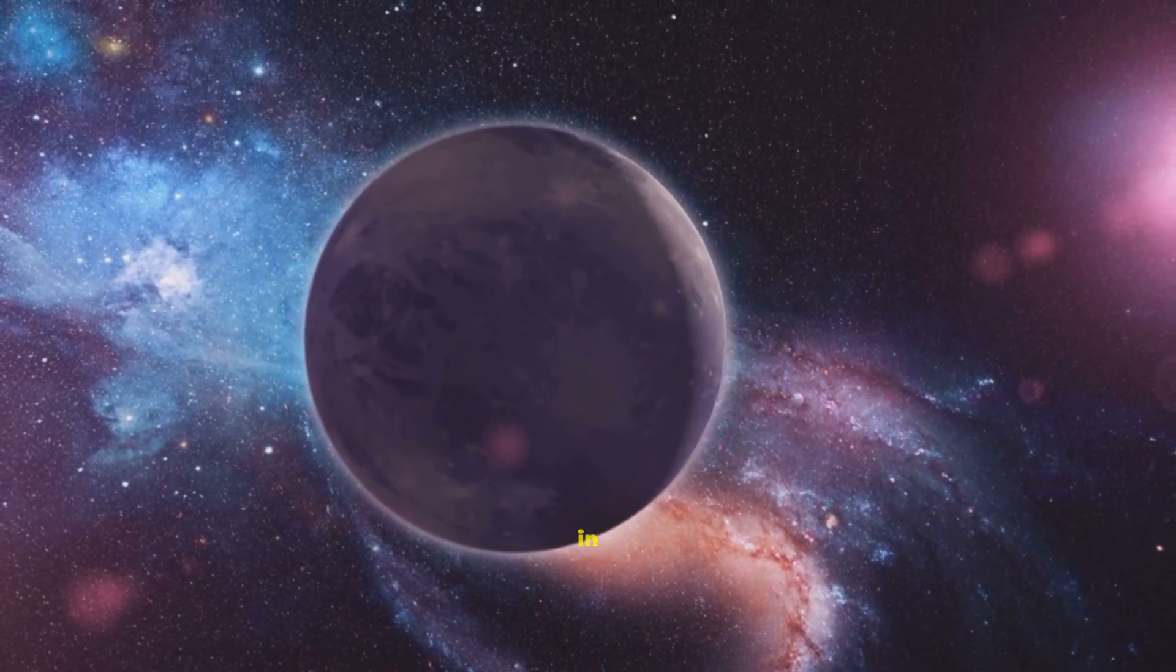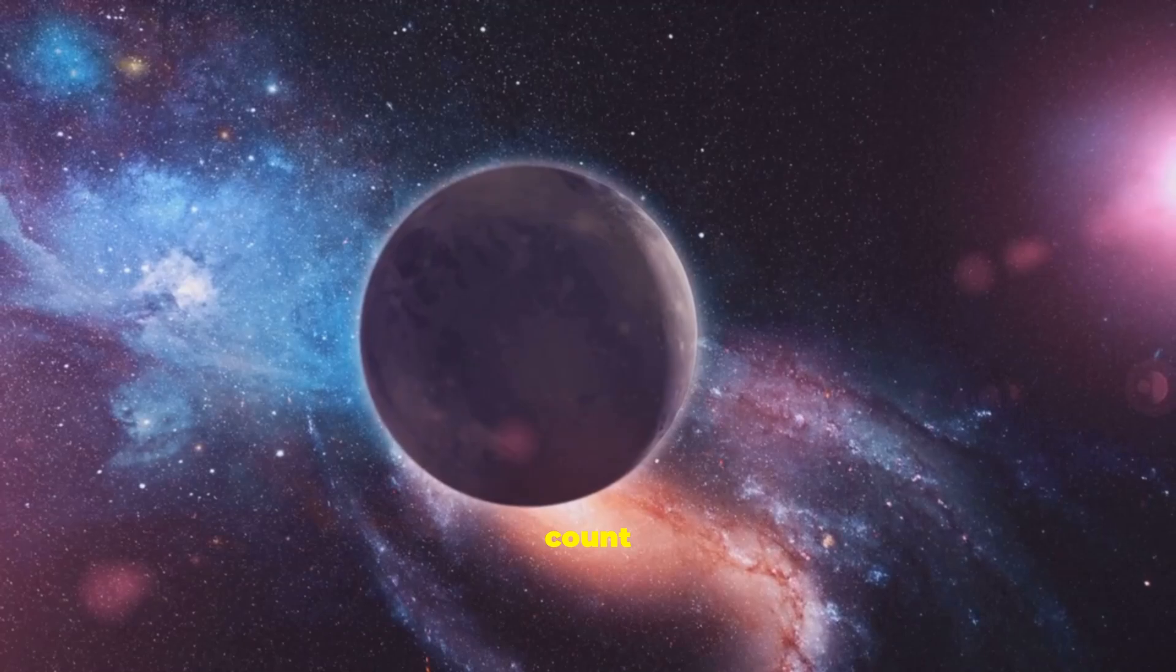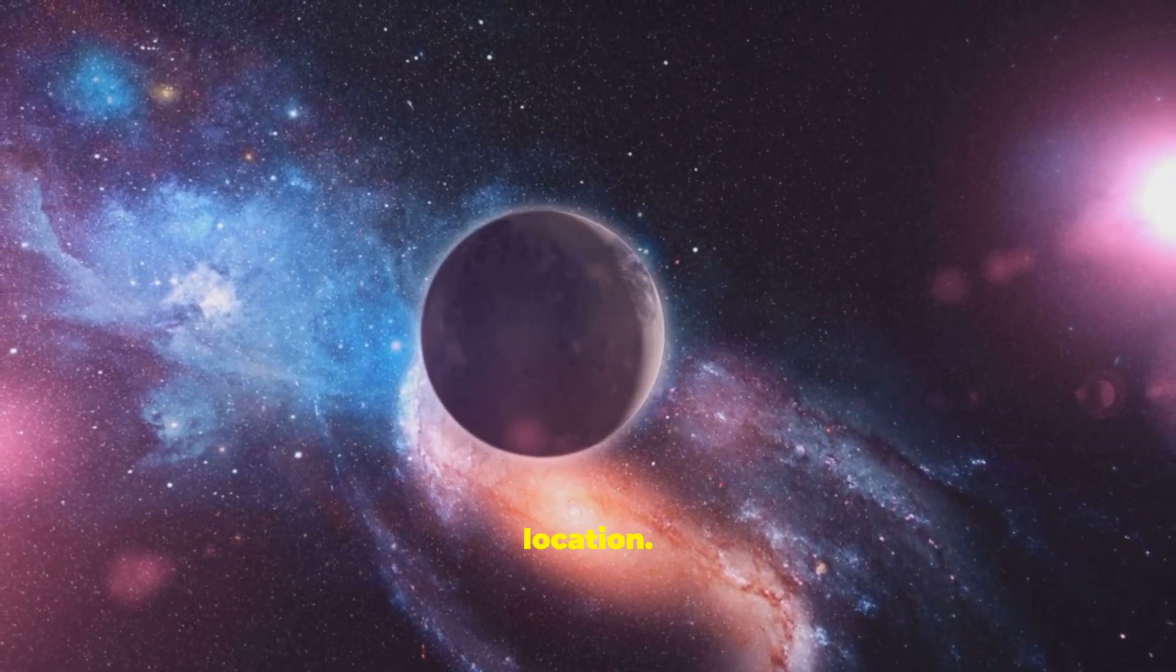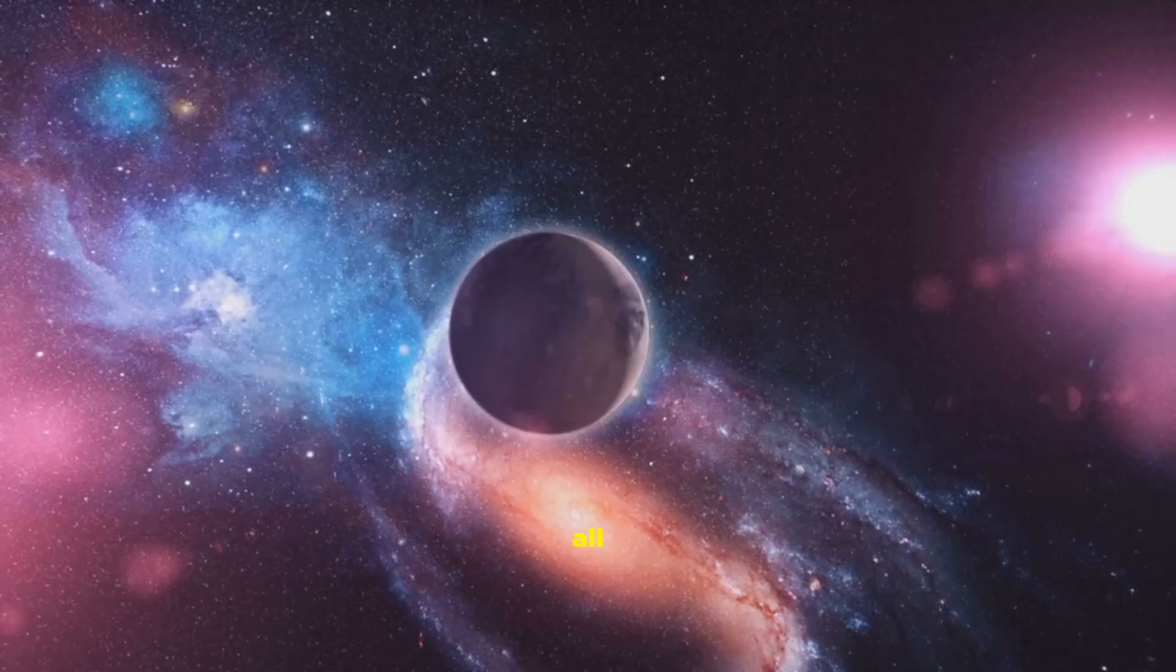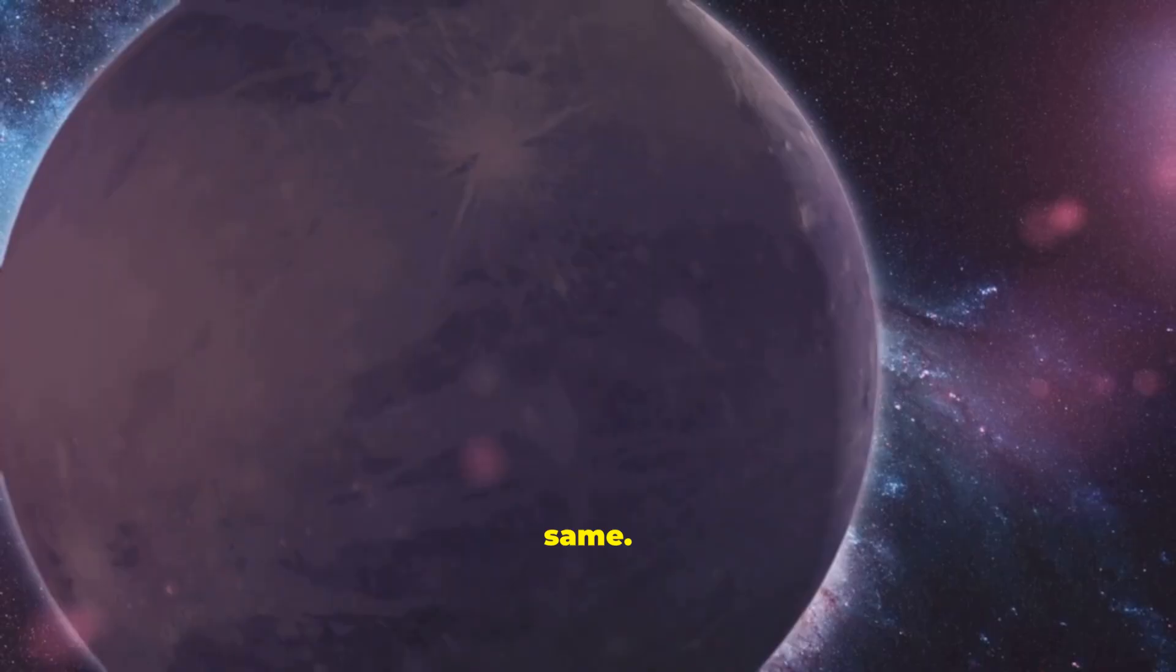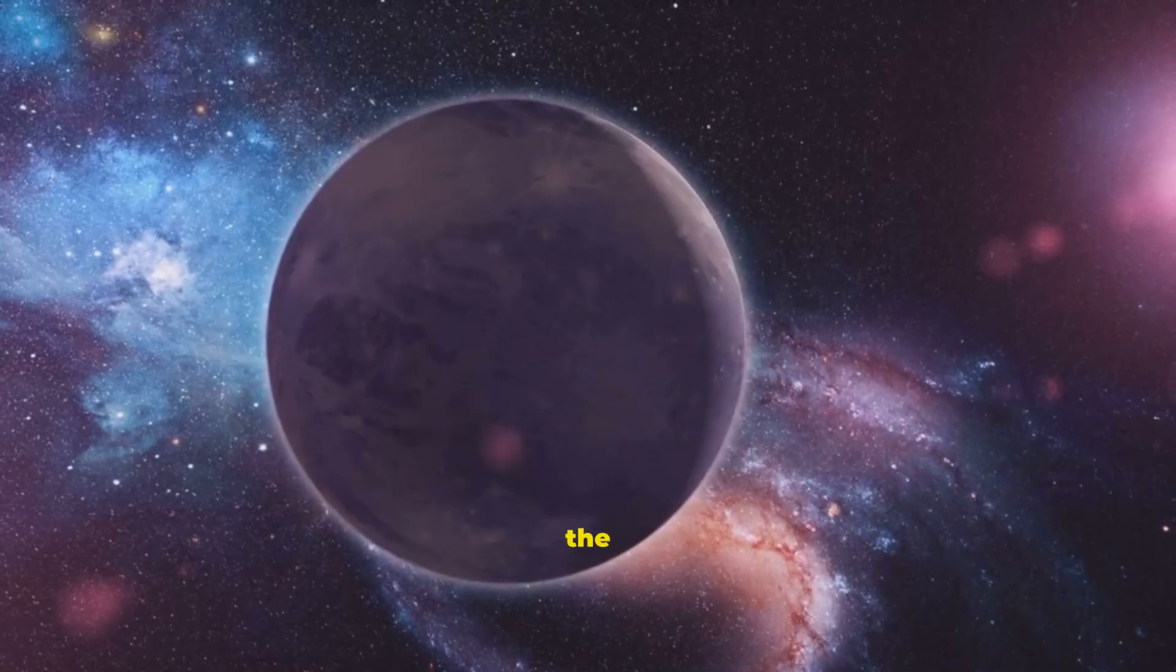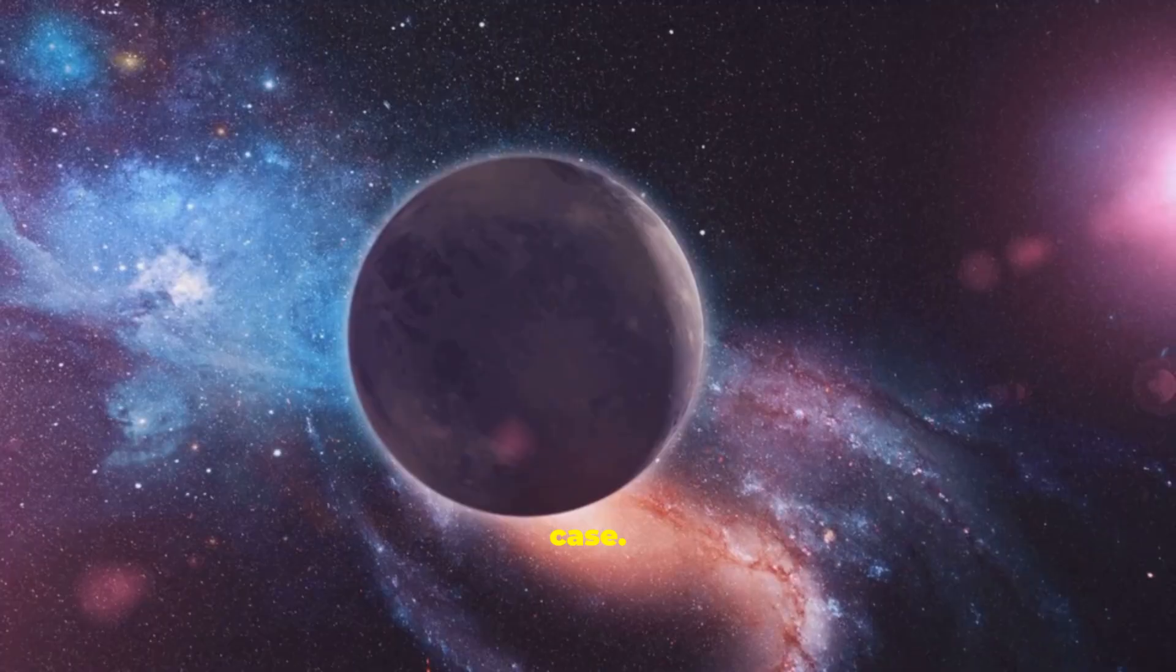One, the object has to be in orbit around the sun. That's why moons don't count, because they orbit planets. And two, the object had to be unique in its location. That's why asteroids don't count. There are a bunch of them all in the same general location that all pretty much look the same. From what we could see at the time, Pluto fit the bill. It appeared to be the only bright object in the distant solar system. Unfortunately for Pluto, that was not the case.